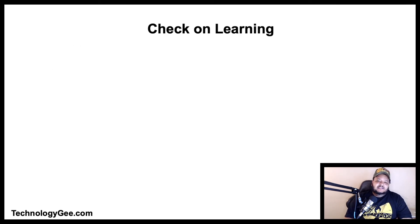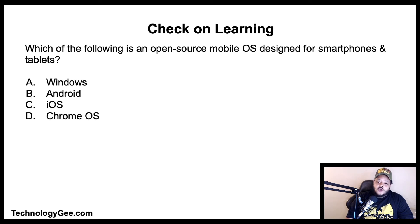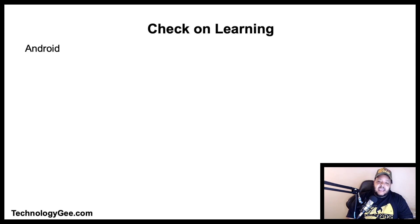Now let's get into some check on learning. The first question is: which of the following is an open source mobile operating system designed for smartphones and tablets? Is it Windows, Android, iOS, or Chrome OS? The correct answer is Android — that is an open source platform.